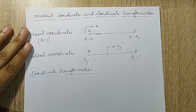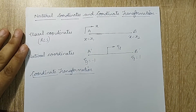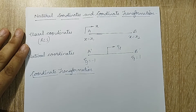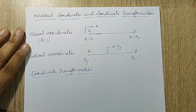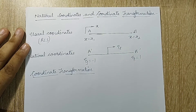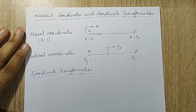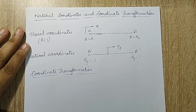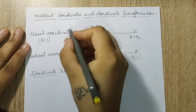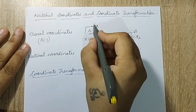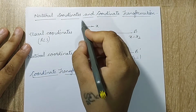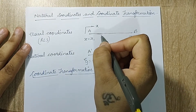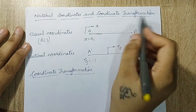Hello everyone, welcome to the next session of finite element analysis. In this session I am discussing about shape functions. In the previous session we discussed shape functions using a rectangular coordinate system. In this session we will talk about a new type of coordinate system called the natural coordinate system and we will see how we can transform an element from rectangular to natural coordinate system.